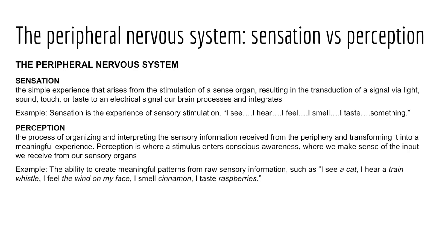Sensation is defined as the simple experience that arises from the stimulation of a sense organ, resulting in the transduction of a signal — via light, sound, touch, or taste — to an electrical signal our brain can process and integrate. When experiencing sensations, we make statements like: I see, I hear, I feel, I smell, or I taste something.